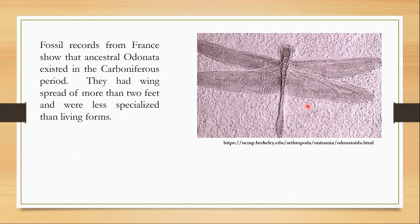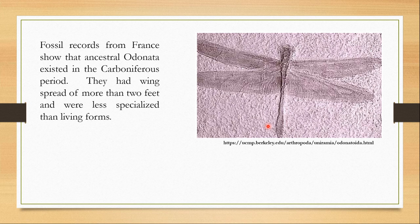Here is a picture of a fossil found in Germany, approximately 150 million years old. Fossils from the Carboniferous era show that ancestral Odonata were really huge in size — their wingspan spread about 2 feet. But fossils from the Permian era are about the same size as living Odonata.